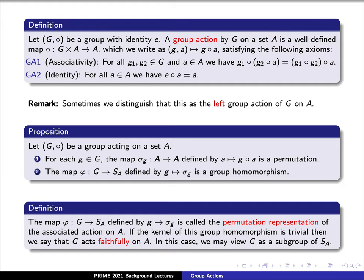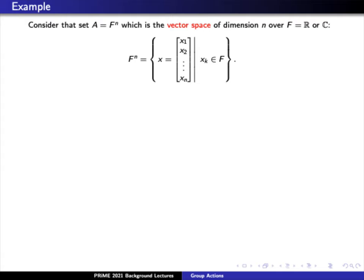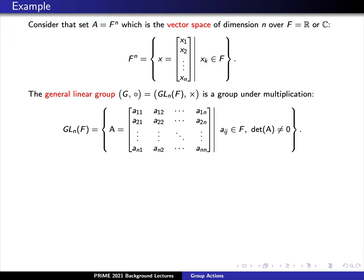We'll focus on this in quite a bit of detail today. Here's an example that you probably have seen from linear algebra, but didn't quite think of it in this way. Consider a set capital A, which is just the vector space of dimension n over either the real numbers or the complex numbers. That is, capital A will consist of the collection of n-dimensional vectors x, which just consists of the coordinates x sub 1, x sub 2, through x sub n. Recall that the general linear group GL_n of F is a group under multiplication. GL_n of F just consists of those n-by-n matrices, which we'll denote by capital A, whose entries, namely lowercase a sub ij, lie inside of F and the determinant is not equal to zero. These are just the invertible n-by-n matrices that have entries in F.